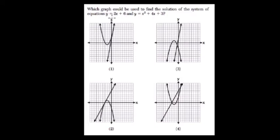Well, first of all, 2x plus 6, we know it's a positive slope with a y-intercept of 6.